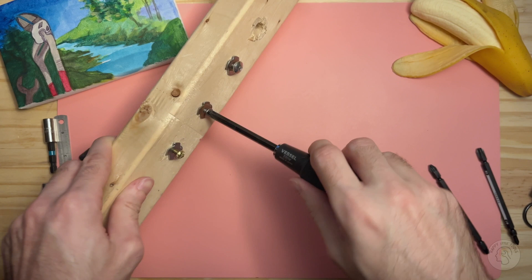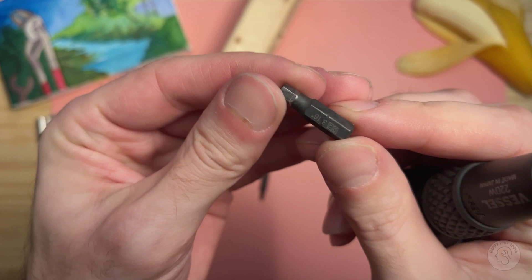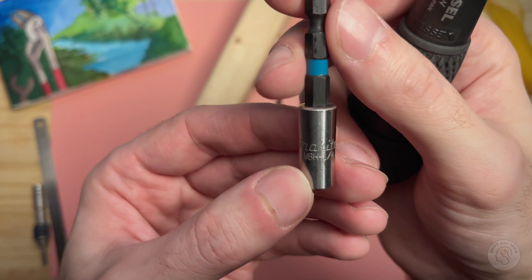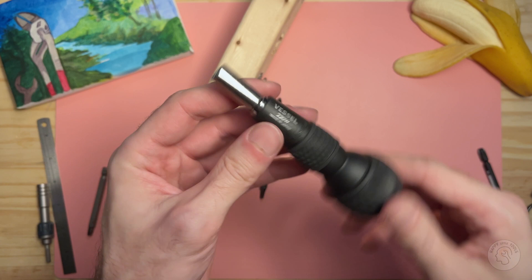Now if you want to use these one inch bits then it's pretty simple. You just have to have an adapter. So here I have my Makita MBH quarter that I am very fond of and that sets itself right in there no problem. And then I can use my one inch bits no problem.